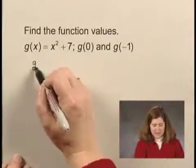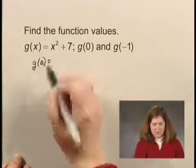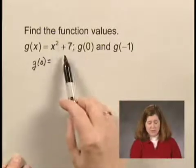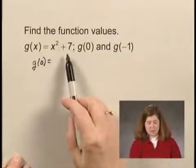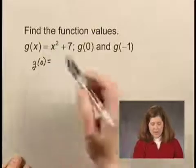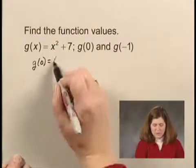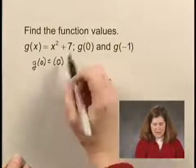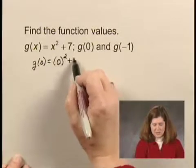To find g of 0, we substitute 0 for x, wherever x occurs in the expression that defines the function. Here we have x squared. So I'm going to put 0 in parentheses, just substituting that for the x, and then that is squared. Plus 7.